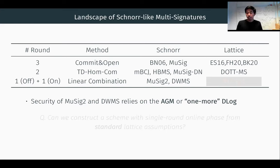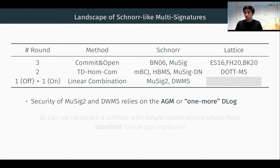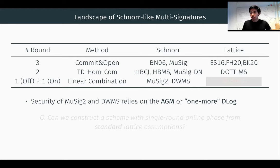The latest works on this line of research, MuSig2 and DWMS, require only one round of interaction in the online phase. The first round of interaction can be pre-processed in the offline phase, because the first commit message does not depend on the message to be signed. This is a very nice feature. However, unfortunately, the security proof of those existing schemes relies on either the algebraic group model or the one-more discrete log assumption.